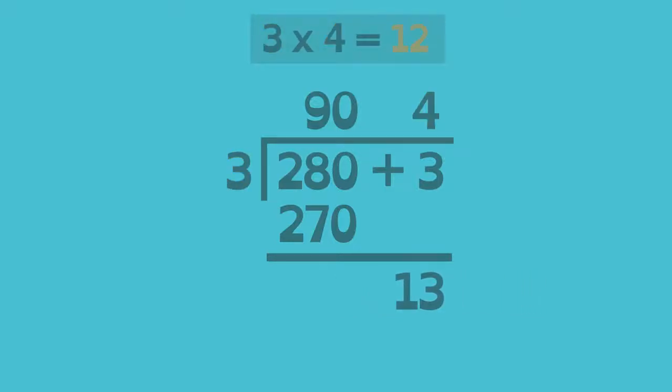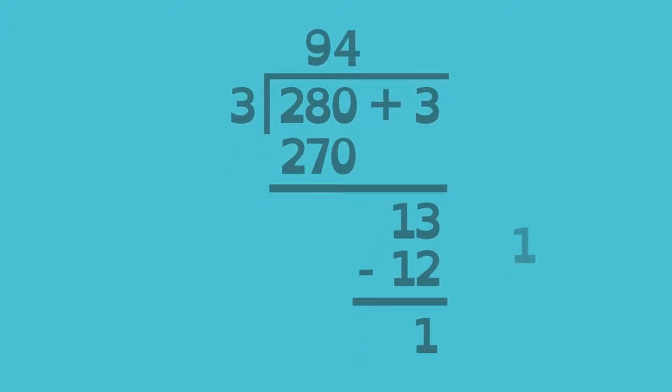Since 3 times 4 is 12, 13 ones can be divided by 3 4 times, making the answer 9 tens plus 4 ones, or 94, with a remainder of 1.